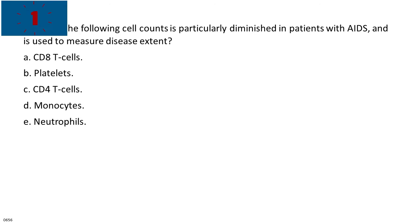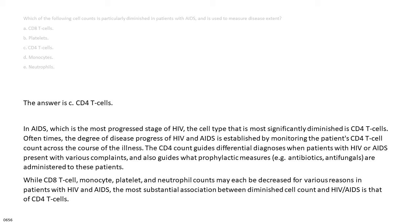The answer is C. CD4 T cells. In AIDS, which is the most progressed stage of HIV, the cell type that is most significantly diminished is CD4 T cells.